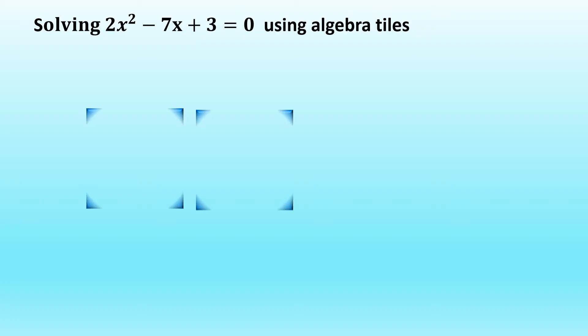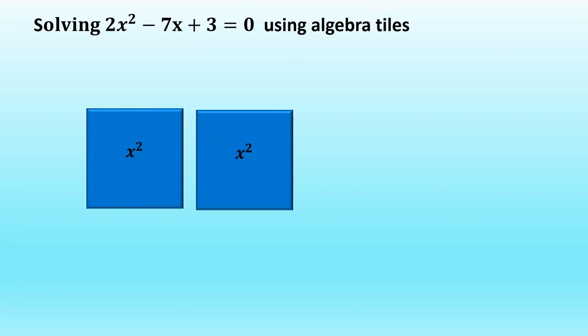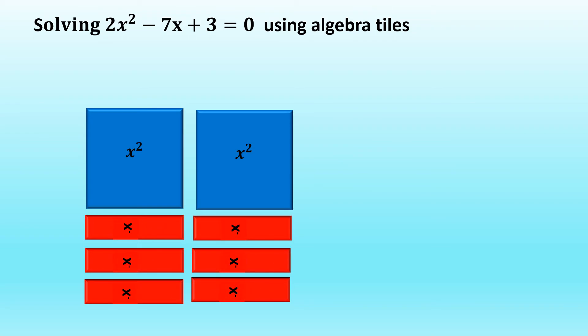Let us rearrange the tiles again. So we have the large square tiles in the same position and we have 6 red tiles below them. Then we just put 1 red tile on the right side of our blue tile. And then below that, we have our 3 small yellow tiles.